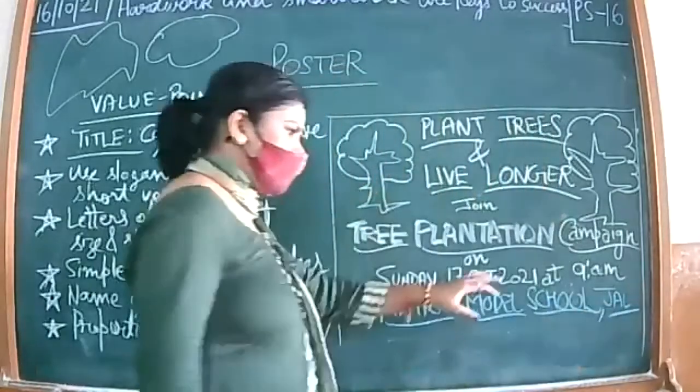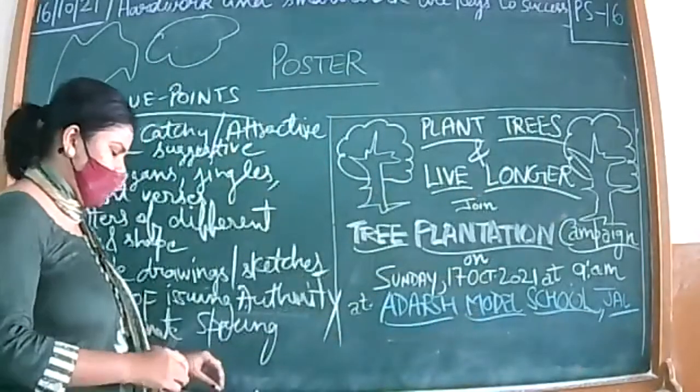You have to write complete words, Jalandhar. There is no space. That's why I'm writing J-A-L. Otherwise, you have to write the complete venue.